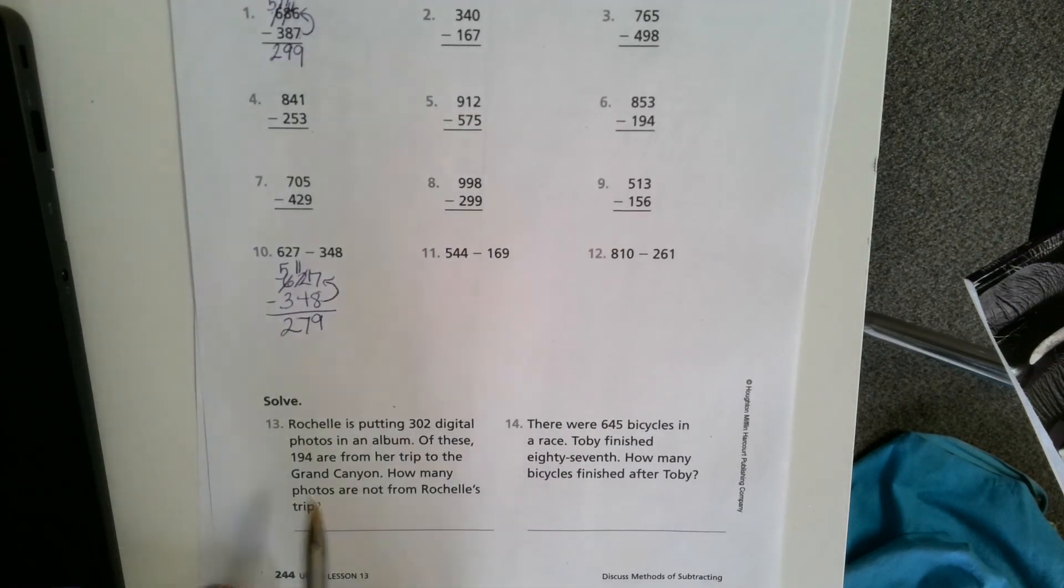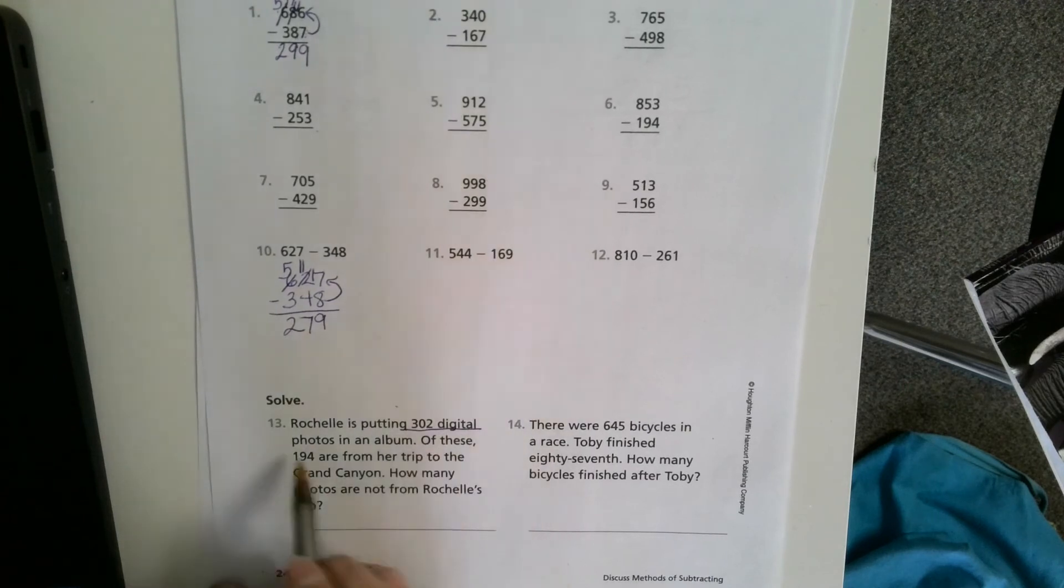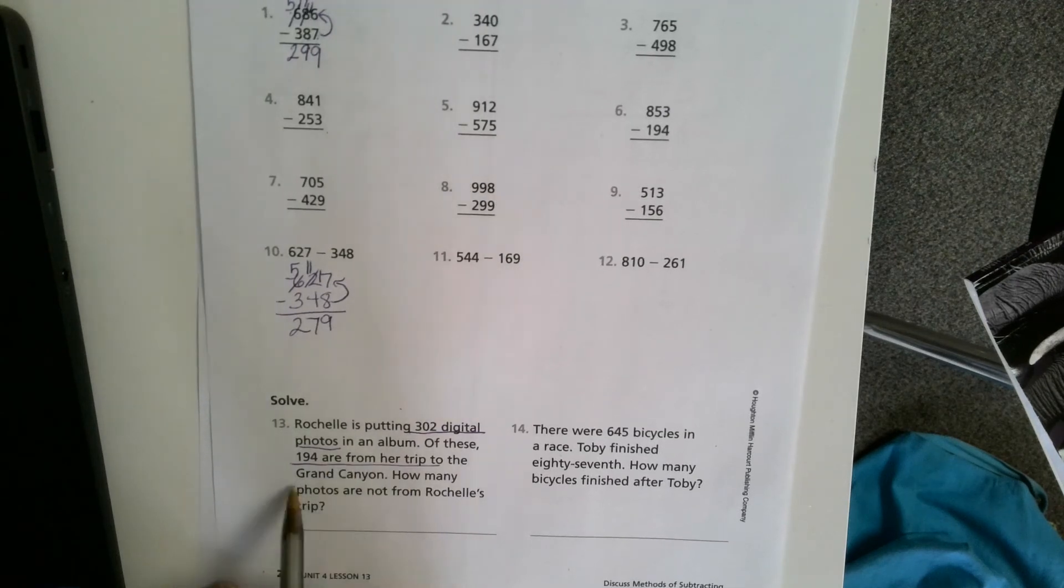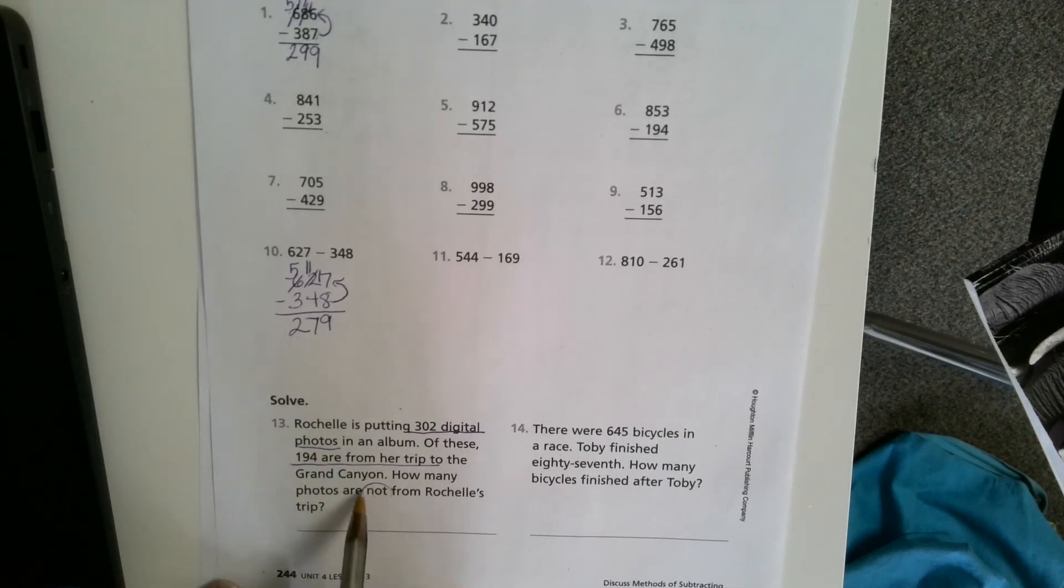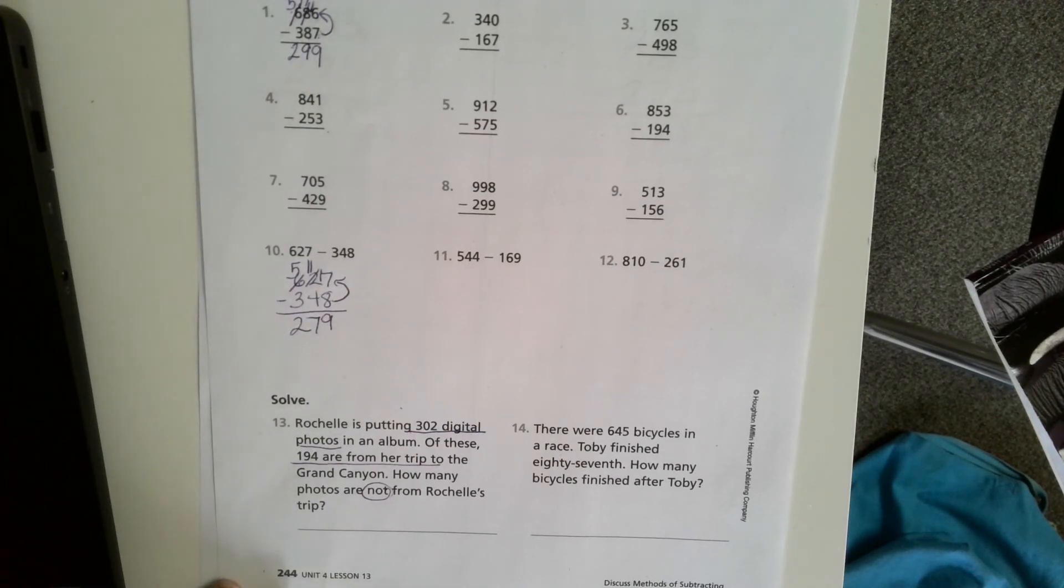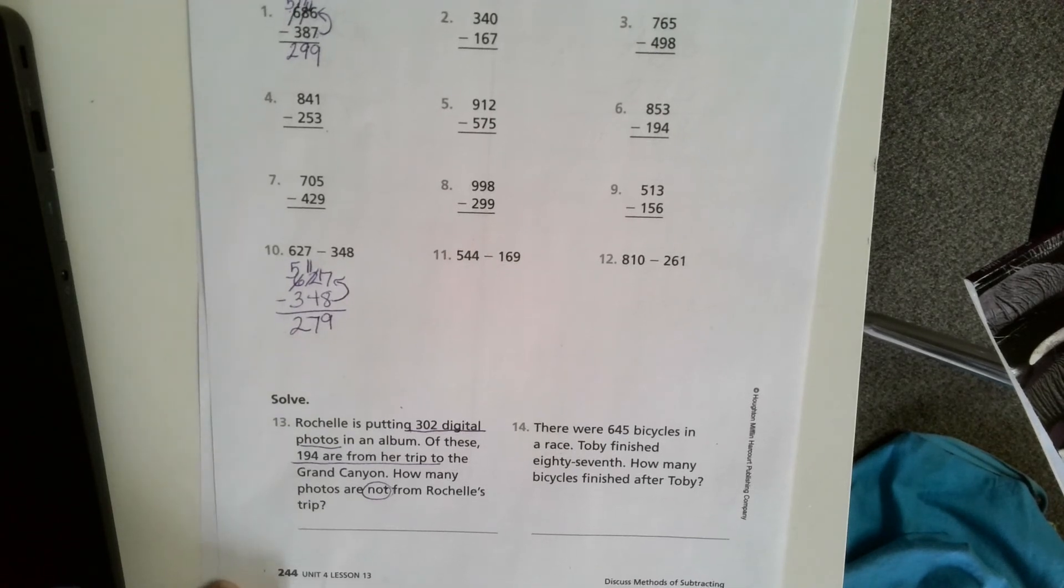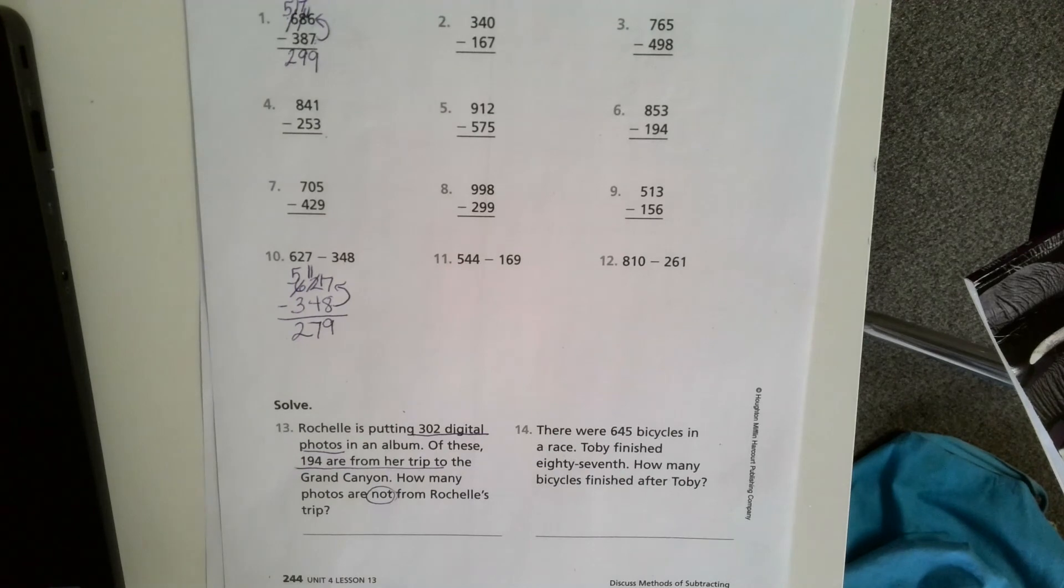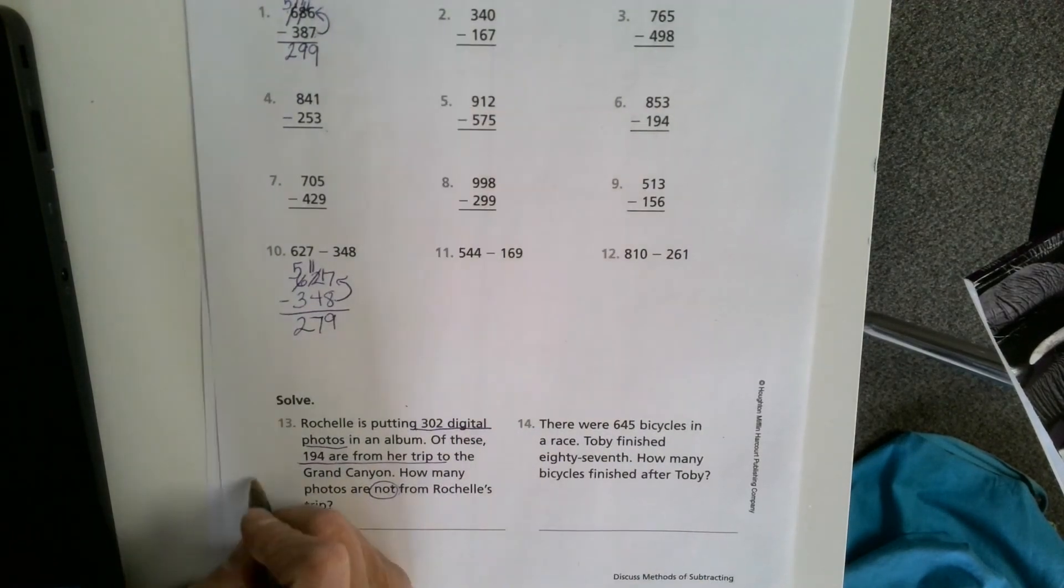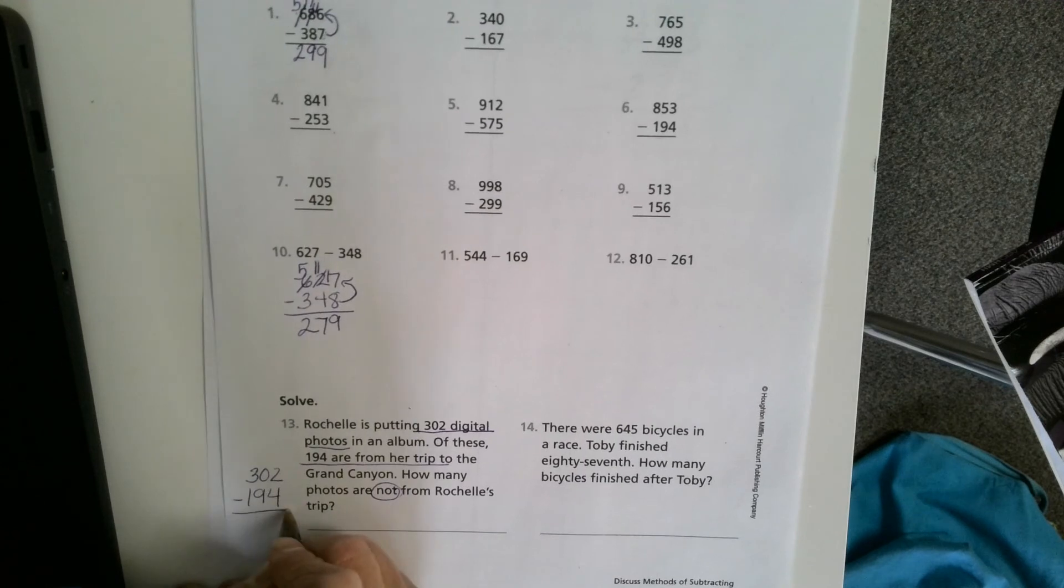We'll try one more. Number 13. Rochelle is putting 302 digital photos in an album. Of these, 194 are from her trip to the Grand Canyon. How many photos are not from Rochelle's trip? Well, if I added, my answer would not be reasonable. It'd be about 500. So that wouldn't make sense since I know she only has 302 photos in all. So I know I'm going to subtract. So the first thing I'm going to do is stack it. 302 minus 194.